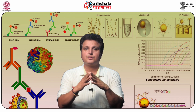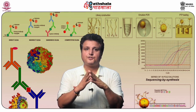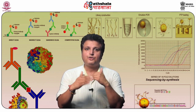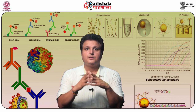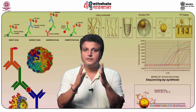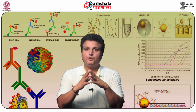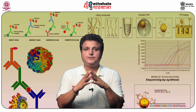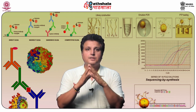Bacteria are ideal hosts for the amplification of DNA molecules. They can also serve as factories for the production of a wide range of prokaryotic and eukaryotic proteins. However, bacteria lack the necessary enzymes to carry out post-translational modifications such as the specific cleavage of polypeptides and the attachment of carbohydrate units. Thus, many eukaryotic genes can be correctly expressed only in eukaryotic host cells.